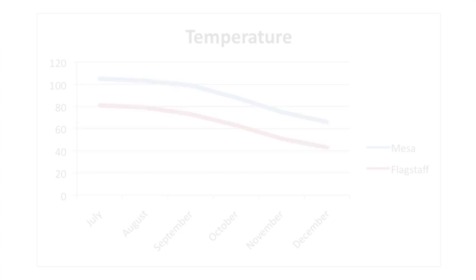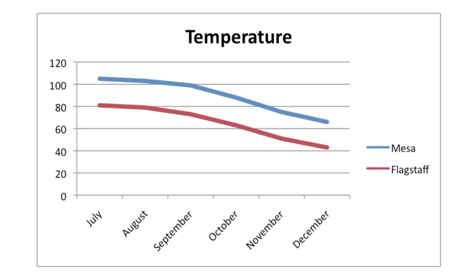Let's move on to this double line graph. Which city, Flagstaff or Mesa, has higher temperatures? Can you think of other questions relating to the data on the line graph? Of course you can. Do you know why Flagstaff is always colder than Mesa? Tell your neighbor.